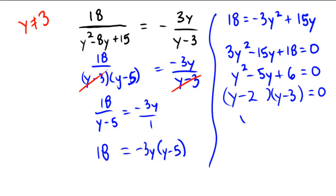So what are the two solutions? y could be either 2 or 3, but y cannot be 3. So the final answer we would submit here would be y equals 2 alone.